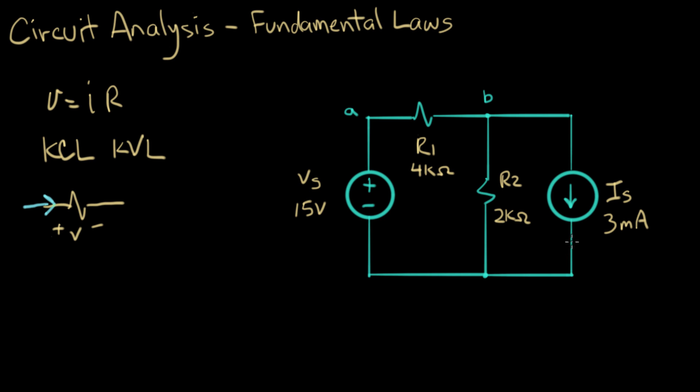And down at the bottom here there's the third node which is this distributed node here. It connects the voltage source, the resistor, and the current source. This is all, we'll call that node C.